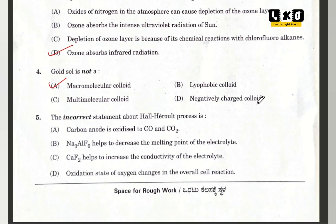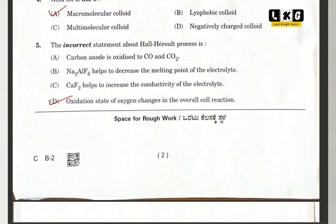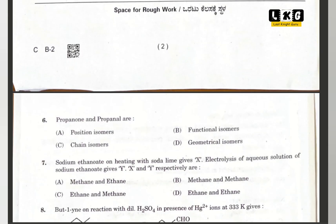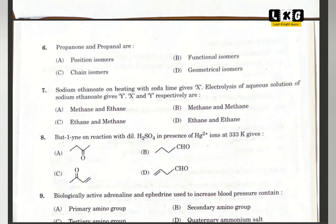Question number 5, the incorrect statement about the Hall-Herald process is option D: the oxidation state of oxygen changes in the overall cell reaction. That will be your correct option. Question number 6, propanone and propanol are functional isomers.